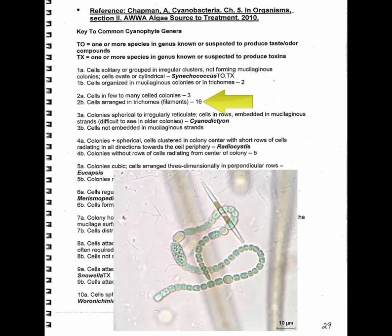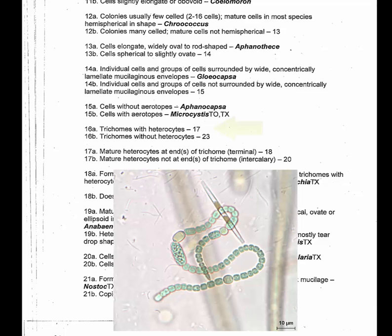16A asks: trichomes with heterocysts — and of course these are our heterocysts. So then we go to 17: mature heterocysts at the end of the trichome, or terminal — in other words, at the end of the filament. The answer is no.